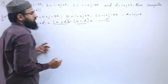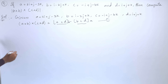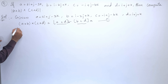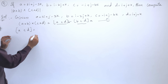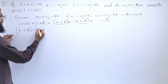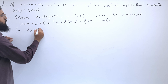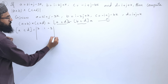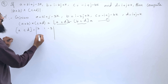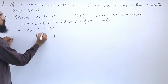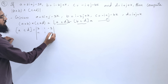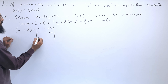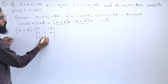Let us find out [A, C, D]. The scalar triple product [A, C, D] is the determinant with A = (2, 1, −3), C = (−1, 1, −4), and D = (1, 1, 1).